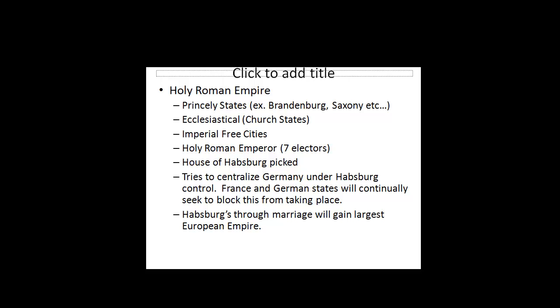And then the imperial free cities — there were about 50 — which had gained their own charters away from any of the princely states or the ecclesiastical states. The Holy Roman Empire was made up of over 300 different countries, some of them smaller than the town of Hummelstown. The Holy Roman Emperor was picked by seven electors of what were considered the seven most important states. From the mid-1300s onward, the Holy Roman Emperor, with one small exception, came from the House of Habsburg, which tries to centralize Germany under Habsburg control.